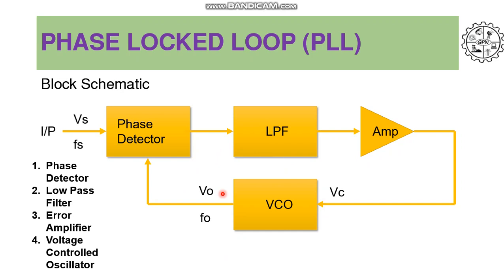Now let's say some input signal Vs is applied to the phase detector with a certain set frequency Fs. As this input signal Vs of frequency Fs is applied to the PLL, the phase detector, which is also set to be a mixer, detects and compares the phase and frequency of the incoming signal to that of the output of this VCO — the VO voltage running at FO. So essentially the phase detector compares Vs with VO, having frequencies Fs and FO respectively. The phase detector is basically a multiplier and produces two frequencies, that is sum and difference frequency: Fs plus or minus FO.